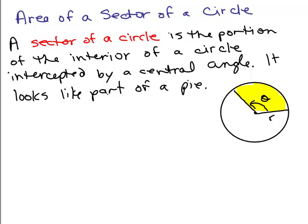We're going to find a formula for the area of a sector of a circle. A sector of a circle is the portion of the interior of a circle intercepted by a central angle. It looks like part of a pie.